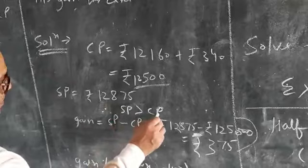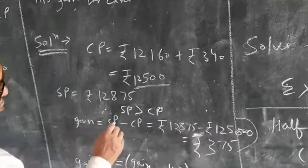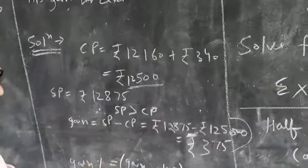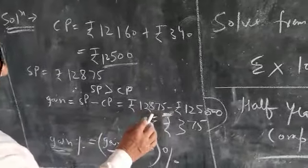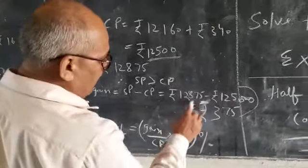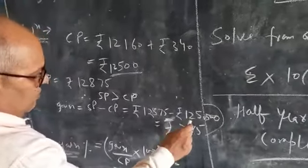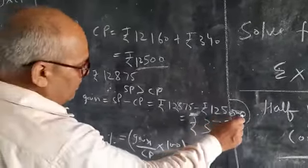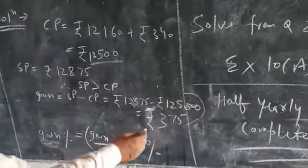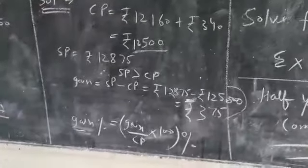Gain percent. Gain equals SP minus CP. Therefore, 12,875 minus 12,500 equals 375.